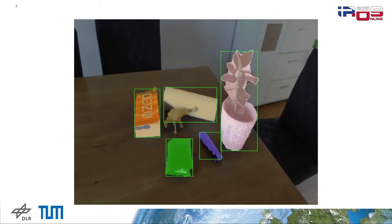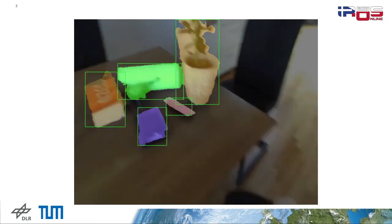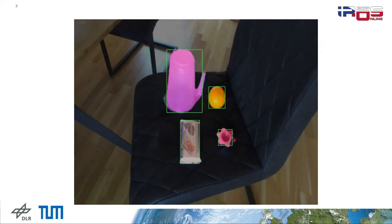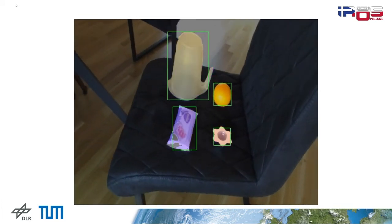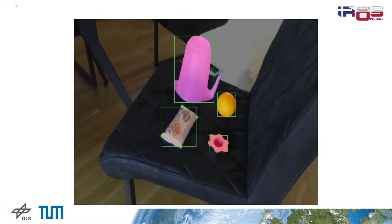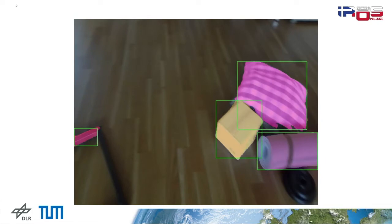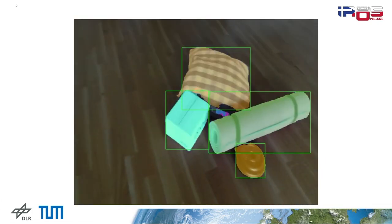Our goal is, given a pair of stereo images, to segment an unspecified number of unknown object instances on any dominant horizontal surface. But why unknown objects, and why stereo images, you might ask?